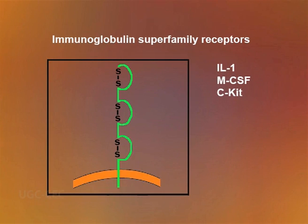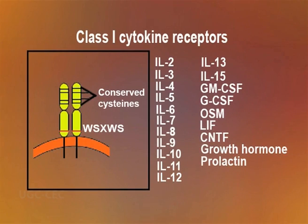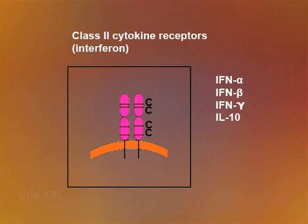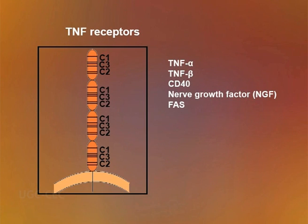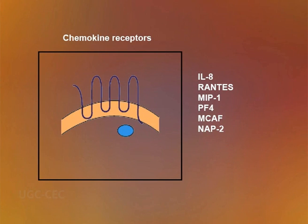There are five families of cytokine receptors. Receptors for the various cytokines are quite diverse structurally, but almost all belong to one of five families: the immunoglobulin superfamily receptors, the class 1 cytokine receptor family (also known as the hematopoietin receptor family), the class 2 cytokine receptor family (also known as the interferon receptor family), the TNF receptor family, and the chemokine receptor family.